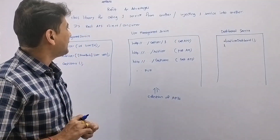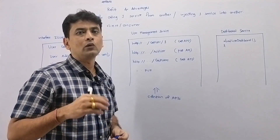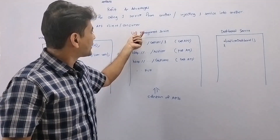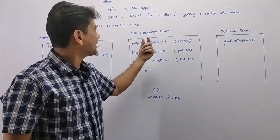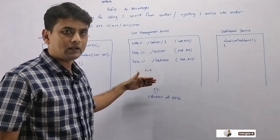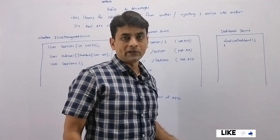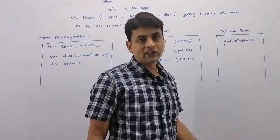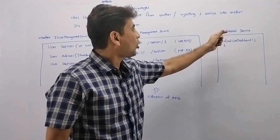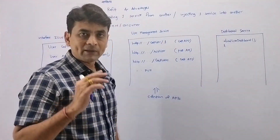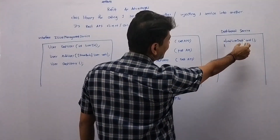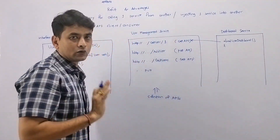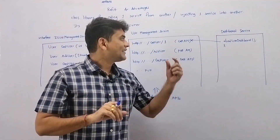Imagine you have a User Management Service — a normal service which has a collection of APIs: Get User, Add User, Get Users, and a few more. Then we have a Dashboard Service, and it has an API called Load User Dashboard. This Dashboard Service wants to call the User Management Service — specifically, it wants to call the Get User API.